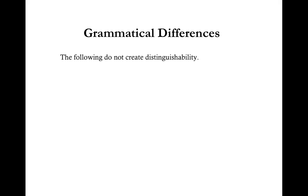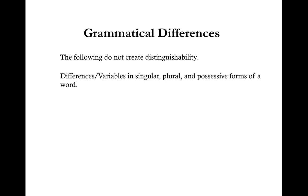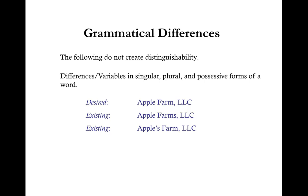Grammatical differences also do not create distinguishability. Differences in singular, plural, and possessive forms of a word are not considered distinct. For example, if your desired LLC name is Apple Farm LLC, and during your search you find Apple Farms LLC or Apple's Farm LLC, both are too similar and your desired name would not be available. An alternative would be Bob's Apple Orchard LLC.